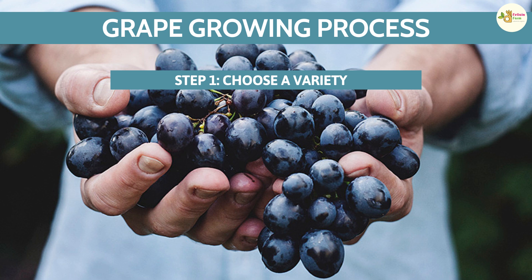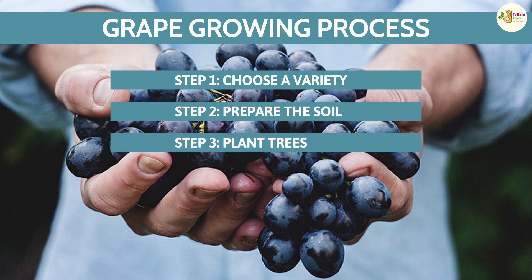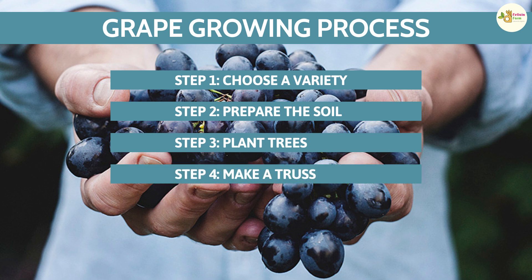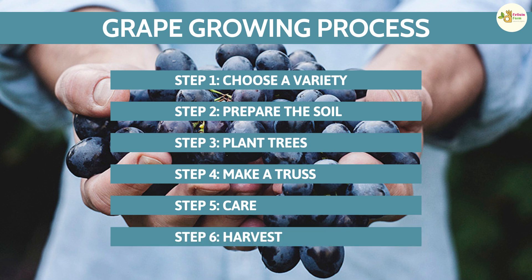Step 1: Choose a variety. Step 2: Prepare the soil. Step 3: Plant trees. Step 4: Make a trellis. Step 5: Care — includes watering, fertilizing, and pest treatment. Step 6: Harvest.